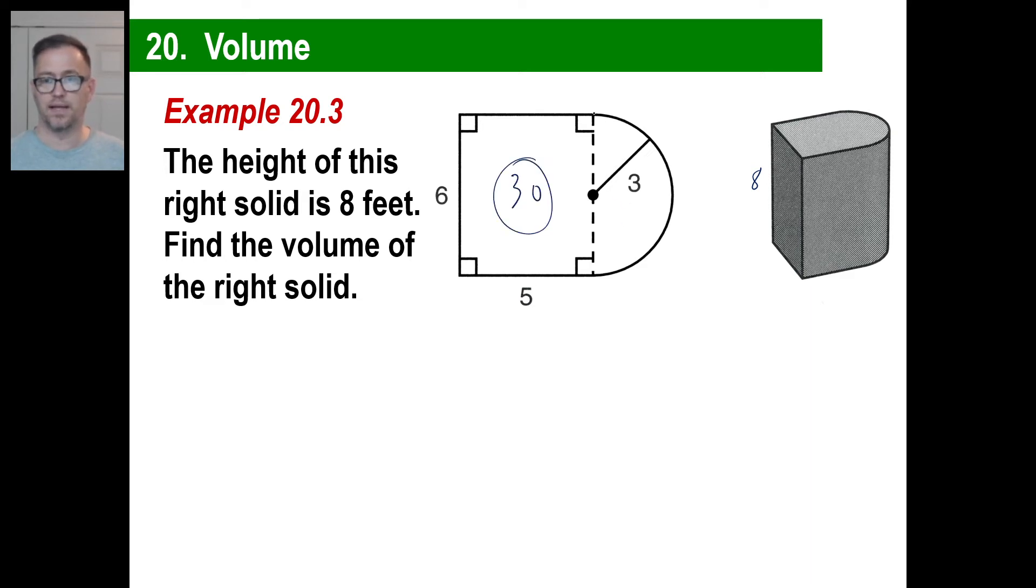Now, what we need to do is find the area of this half of a circle. Don't forget, the area of a circle is pi. We'll just call it 3.14 times the radius squared. The radius squared, 3 squared is 9. And we will divide this all by 2 because we're only going to figure the area of half of a circle. We're not worrying about the bottom this time. We're not finding surface area. We're finding volume. So, all we need is this entire area. We multiply it by 8. That's all we need. We've got the 30.